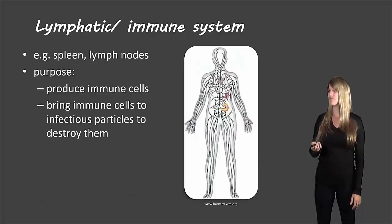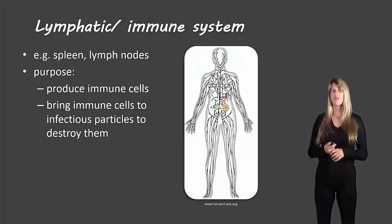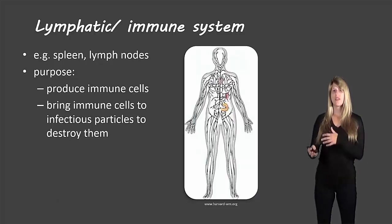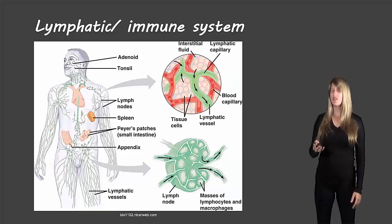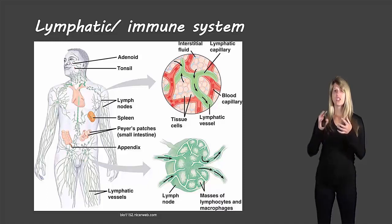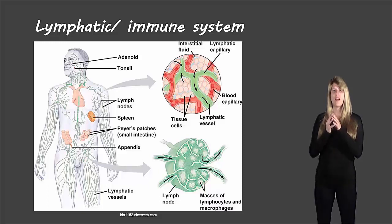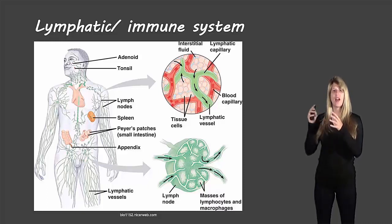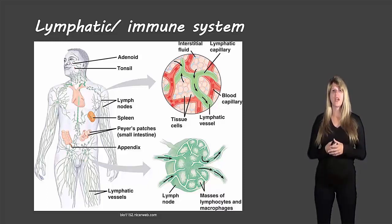Then we have the lymphatic system, or immune system. Things like the spleen and lymph nodes are part of this system and its purpose is to produce immune cells and bring them to where infectious particles are in the body so they can be destroyed. Lymph vessels run throughout the whole body, closely connected to blood vessels, allowing white blood cells to travel into the bloodstream to reach and destroy bacteria and viruses.